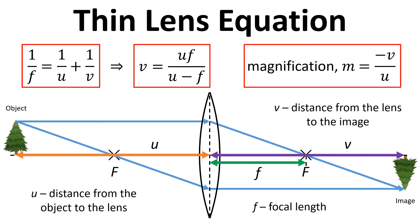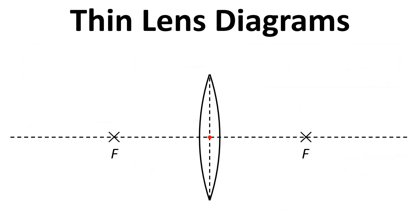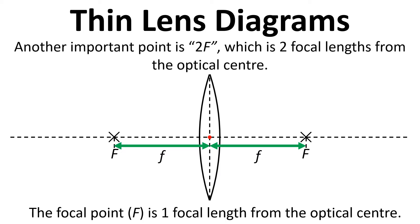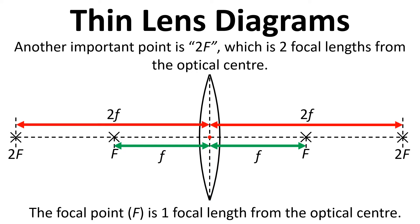Another useful equation is magnification, which equals minus v divided by u. On the thin lens diagram we have the optical centre, a focal point in front of the lens and after the lens at distance f. Another important point is 2f — two focal lengths from the optical centre — with a 2f in front of the lens and a 2f behind the lens. This will be an important reference point as we go through the video.